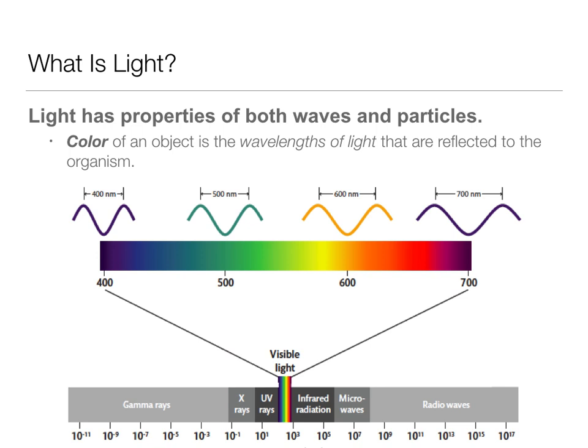The different wavelengths within this tiny spectrum of visible light reflect the color to the organism. You can see that different wavelengths represent different colors — red wavelengths are much longer, blue wavelengths are much shorter, and green is more of a middle wavelength. These different wavelengths will be important as we talk about vision.